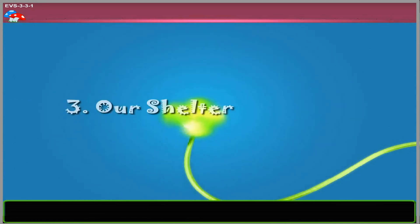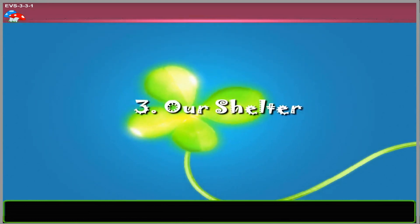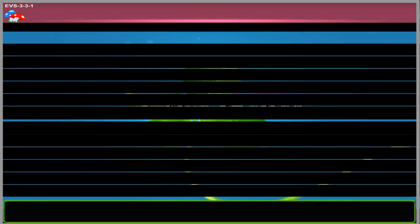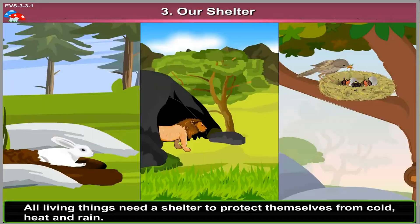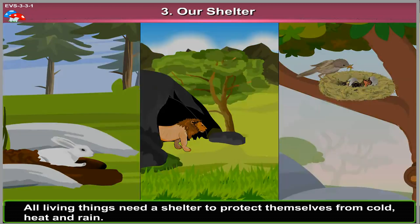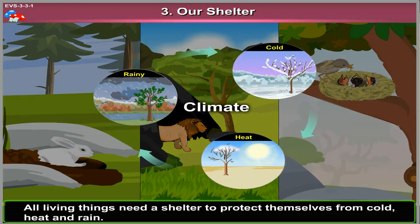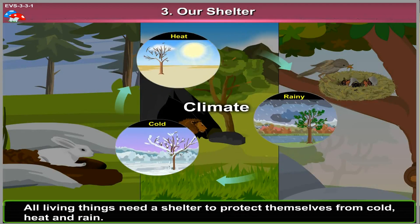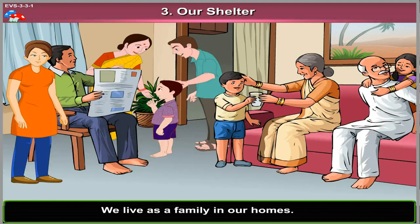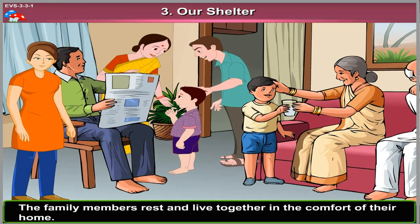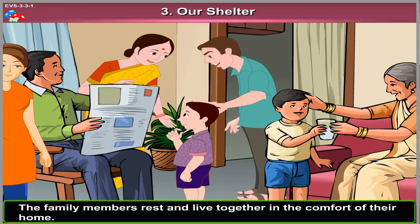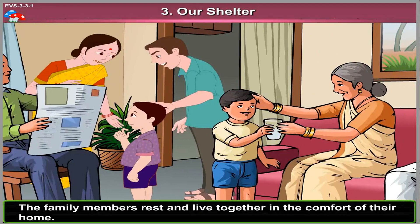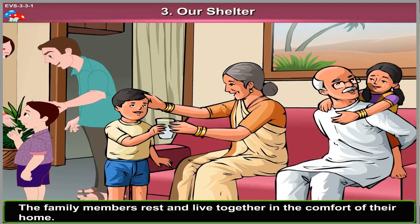Chapter 3: Our Shelter. All living things need a shelter to protect themselves from cold, heat and rain. We live as a family in our homes. The family members rest and live together in the comfort of their home.